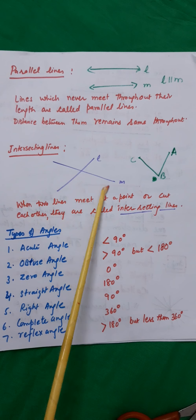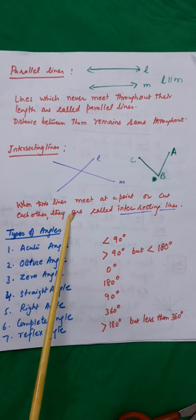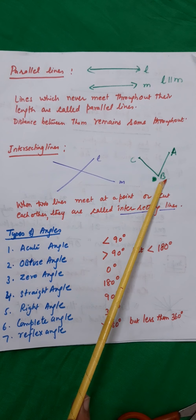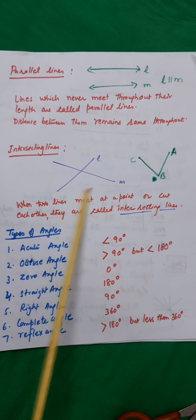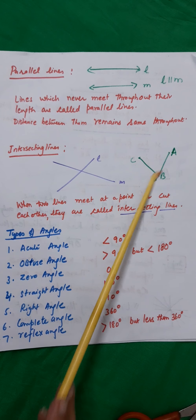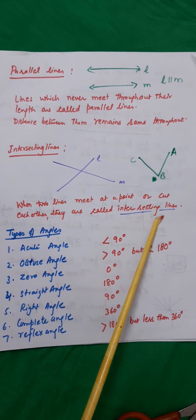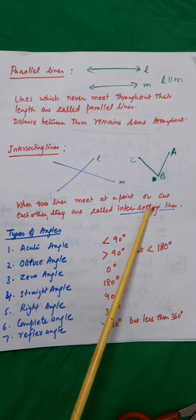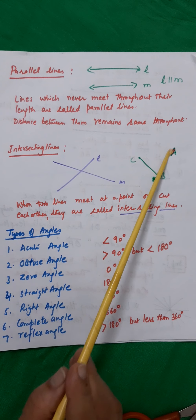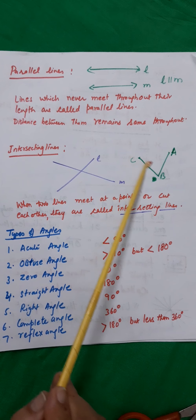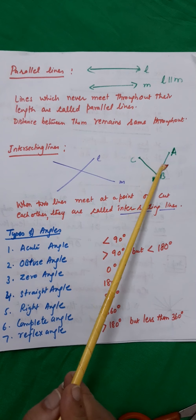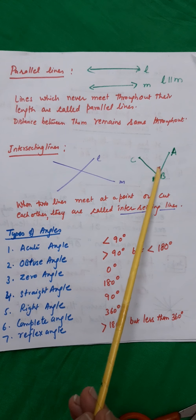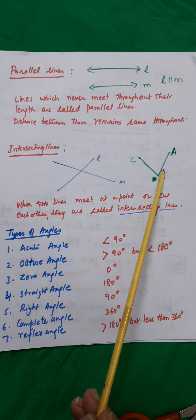What are intersecting lines? When two lines meet at a point or they cut each other — they are cutting each other or meeting at one point — they are called intersecting lines. Then comes the concept of angle. When two lines meet each other, they form something here — this gap — this is known as the angle.